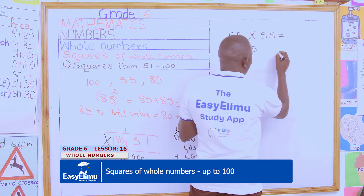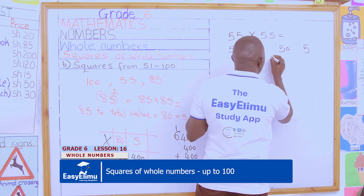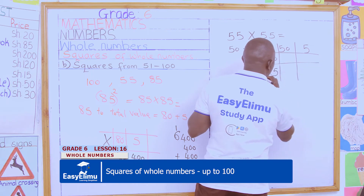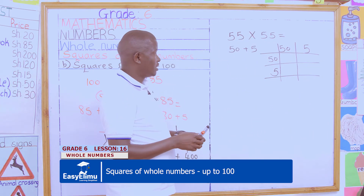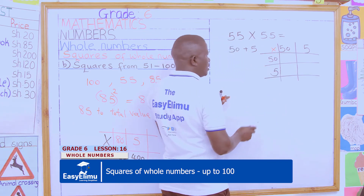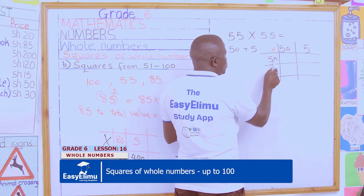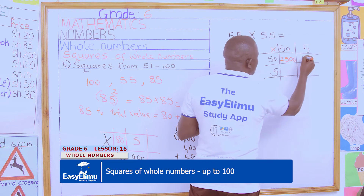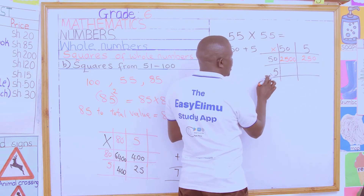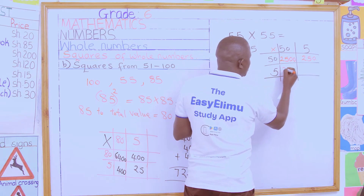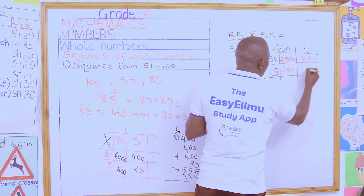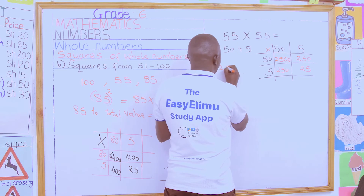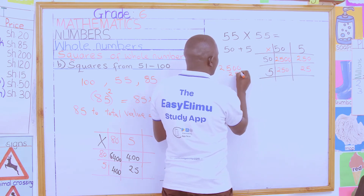Now we use 50 and 5 on both sides of our grid to do the multiplication. 50 multiplied by 50: multiply 5 by 5 to get 25, then add two zeros, giving 2500. 50 multiplied by 5 is 25, plus one zero gives 250. Likewise, 5 multiplied by 50 gives 250, and 5 multiplied by 5 gives 25.